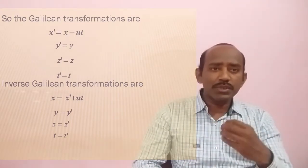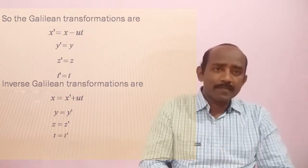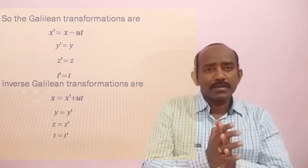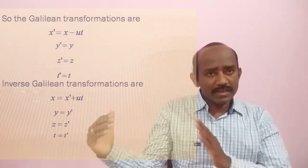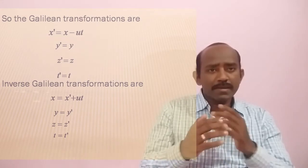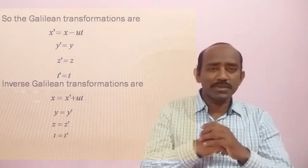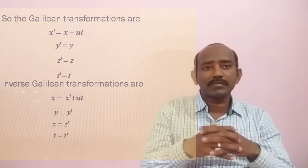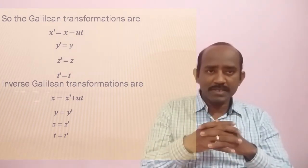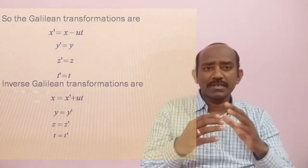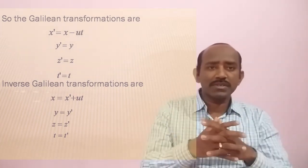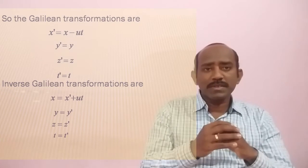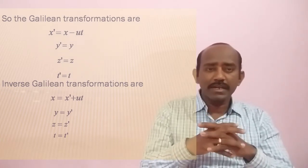These are the position transformation equations. If we are observing the same event from the frame of reference S, then we get the inverse transformation equations. There is no major difference between these two. That is: X = X' + VT, Y = Y', Z = Z', and T = T'. These equations are known as the inverse Galilean transformation equations.